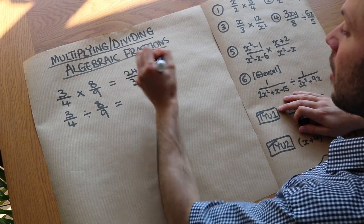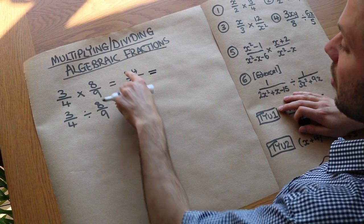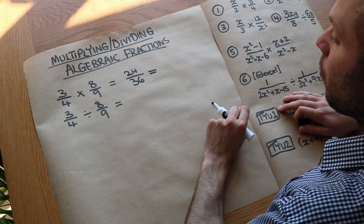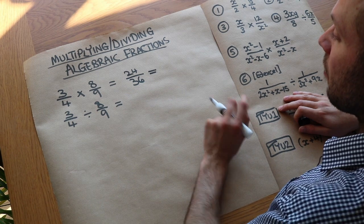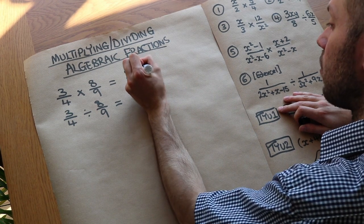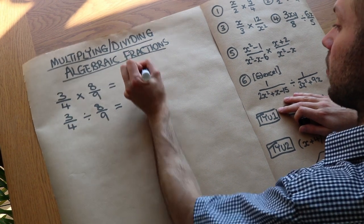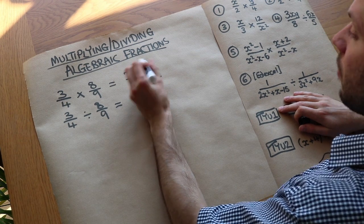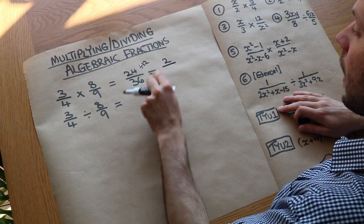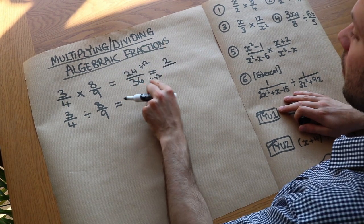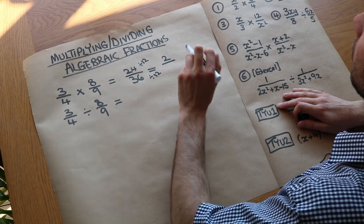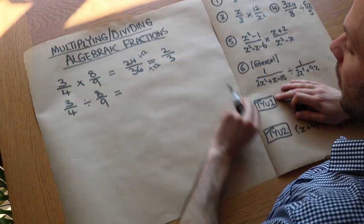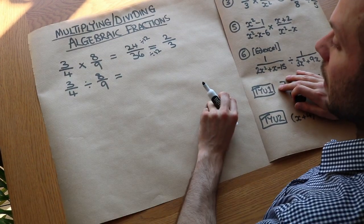We can simplify the fraction: 24 over 36 — we could divide them both by 12, since they're both in the 12 times table. 24 divided by 12 is 2, and 36 divided by 12 is 3, so this simplifies to 2 thirds.